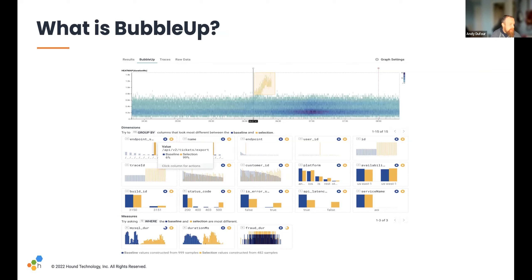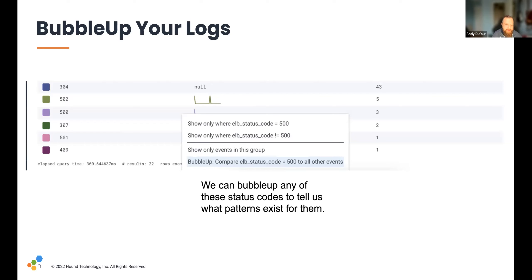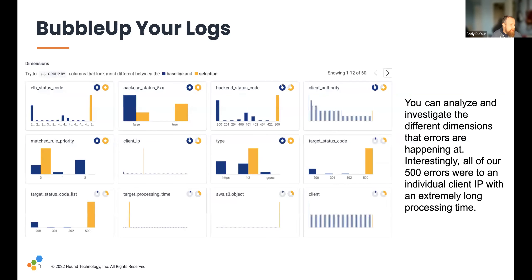BubbleUp is statistical analysis. Anytime you draw a heatmap, you can go to the BubbleUp tab and draw a box around a group of requests to get details into them. Anytime you've got a result set — anytime you run a query and there are results at the bottom of your screen — you can click the context menu and choose BubbleUp. In the context menu, you'd see 'BubbleUp: compare ELB status code equals 500 to all other events.' BubbleUp explains how a subset of data differs from other data in the query set. You visually select a set of data points from the heatmap, compare it to the remaining data, and investigate this comparison with visual charts.